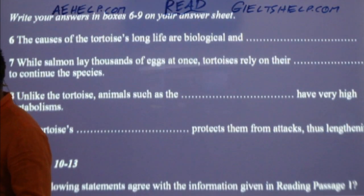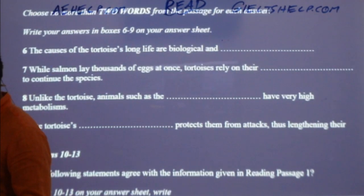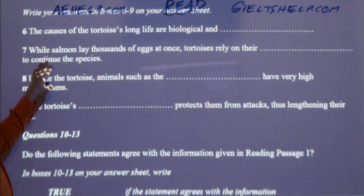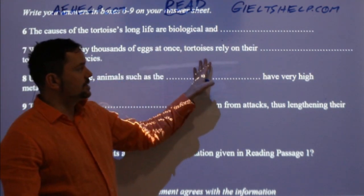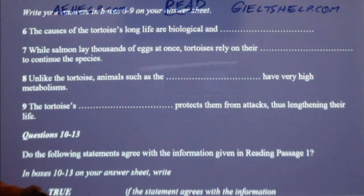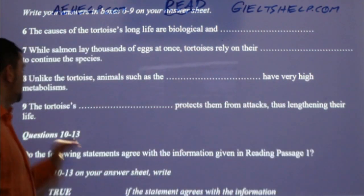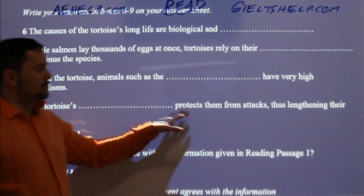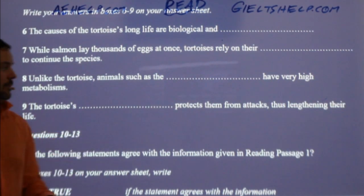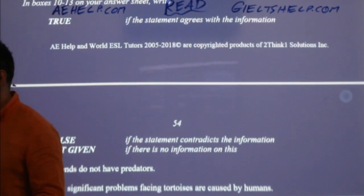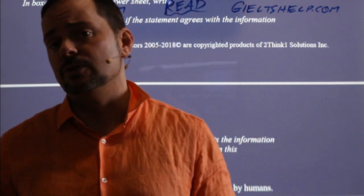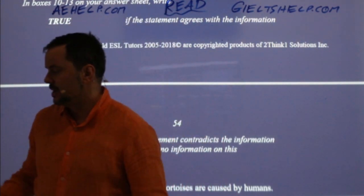Questions six to nine are short answers. 'The cause of the tortoise's long life are biological. While salmon lay thousands of eggs at once, tortoises rely on something to continue the species. Unlike the tortoise, animals such as the something have very high metabolisms. The tortoise's something protects them from attacks, thus lengthening their life.' I'd probably guess 'shell' on that one right away. True, false, not given questions — you never read before the passage; they can just confuse you with a lot of false and not given information.